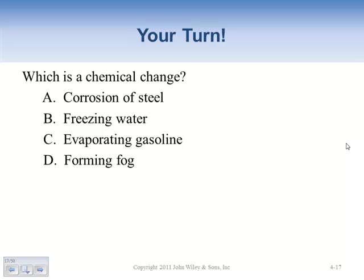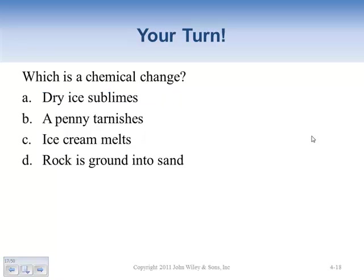Which of these is a chemical change: corrosion, freezing, evaporating, or forming fog? Corrosion of steel — changing iron and steel to oxides — is a chemical change.